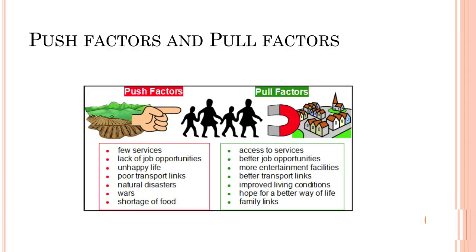Push factors are: few services, lack of job opportunities, unhappy life, poor transportation, natural disasters, wars, and shortage of food. Pull factors are: access to services, better job opportunities, more entertainment facilities, better transport links, improved living conditions, hope for a better way of life, and family links.